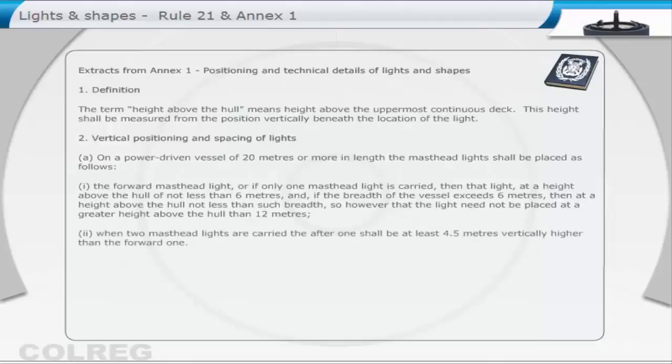Second, when two masthead lights are carried, the after one shall be at least 4.5 metres vertically higher than the forward one.